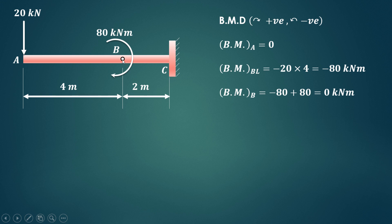Now bending moment at C: we have to consider all the forces and moment on the left hand side of C. So 20, from A to C the perpendicular distance is 4 plus 2, that is 6, and this clockwise moment is of 80 kNm. So it is minus 20 into 6, that is minus 120 plus 80, that is minus 40 kNm.